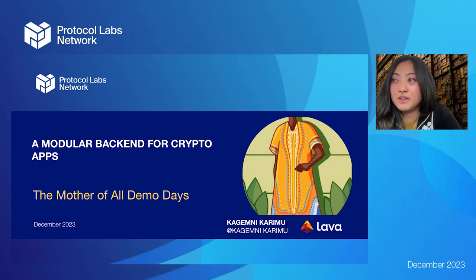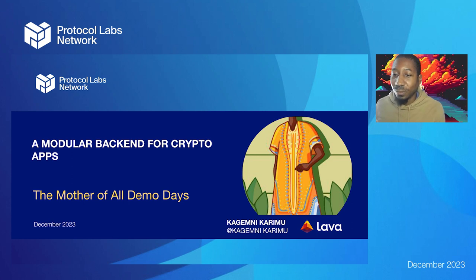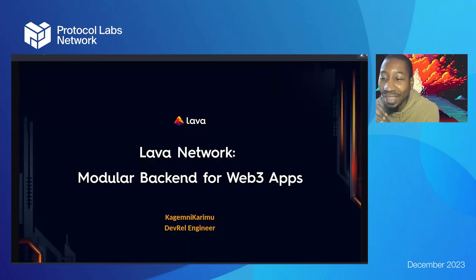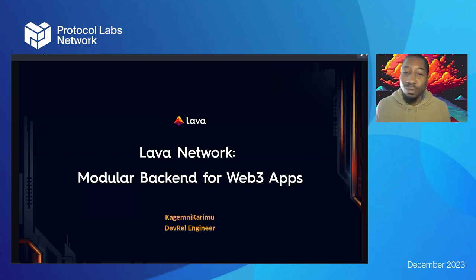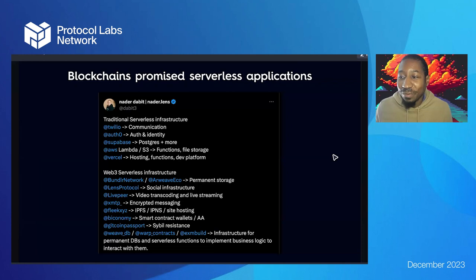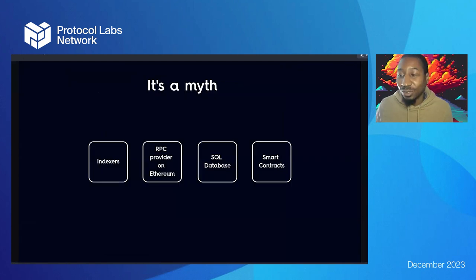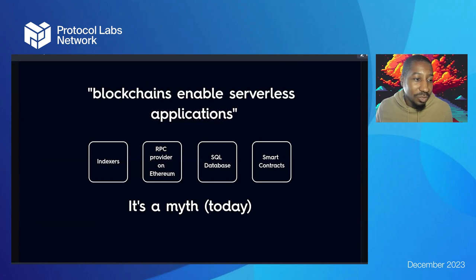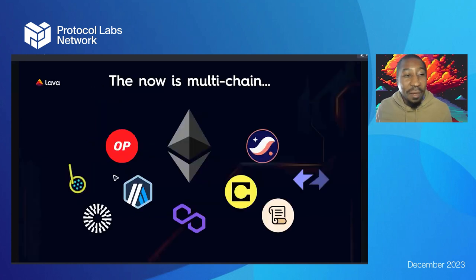Next up is Kajemni Karimu from Lava Network. Lava is a modular backend for web3 apps — it's modular and can expand beyond RPC. With Phase 2, which most recently revealed new features of Lava, it's a whole lot faster and supports a lot more. Web3 blockchains traditionally promised serverless applications, but even though we have serverless in web2, web3 has a plethora of options that don't yet meet the needs of a truly serverless application — behind the scenes the same centralized technologies are employed to connect dApps to blockchains.